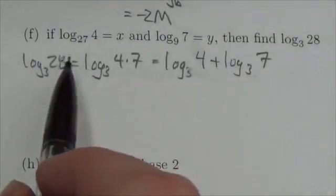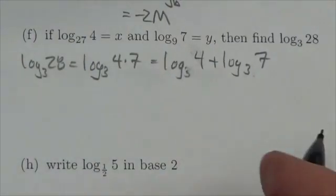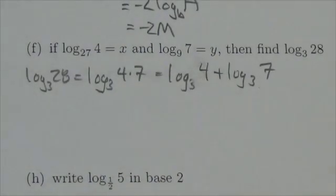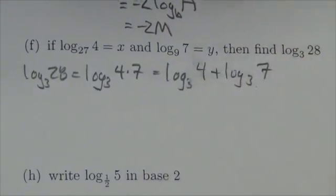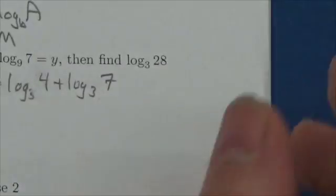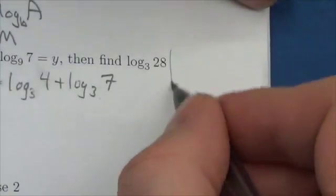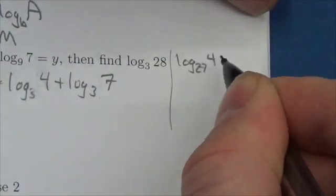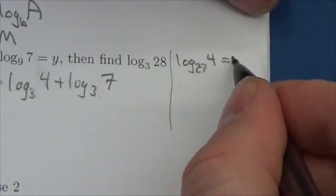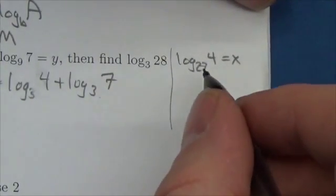Now the problem I've got here is that my restrictions are not log base 3. So what I've got to do here, first of all I've got to figure out what's going on. So I've got to take this log base 27 of 4, which equals x, and I've got to change that to a base 3.